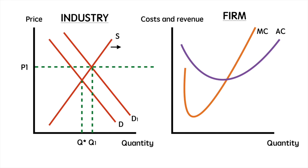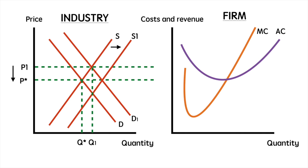As firms enter the market this increases the industry supply of widgets, which forces the market price down from P1 to P star and also pushes down the price the individual firms must take. It increases equilibrium output from Q1 to Q2. Similarly for the firm, this reduces the price they take. As this happens we have to review our areas for total cost and total revenue.